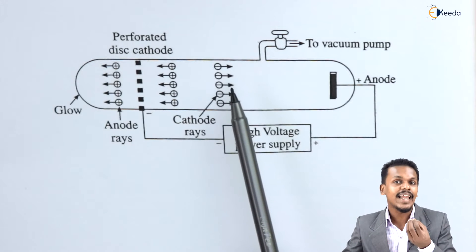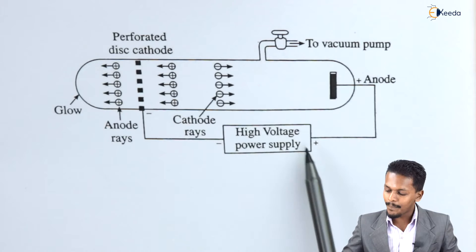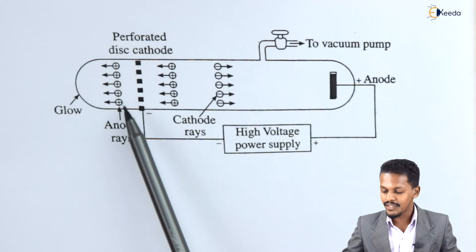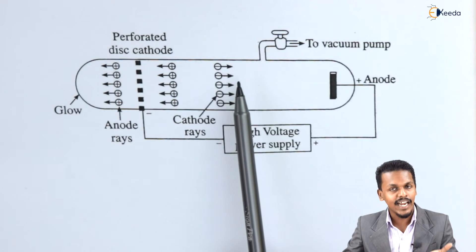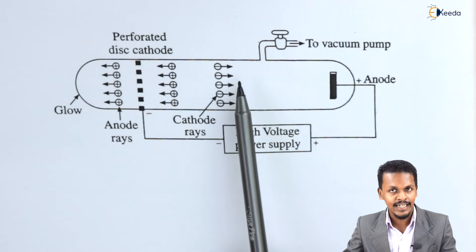In that case, at low pressure when we supply this power of high voltage through this tube, we could find the gas, the hydrogen gas that is basically present in it, obviously it will get ionized into H plus ion.